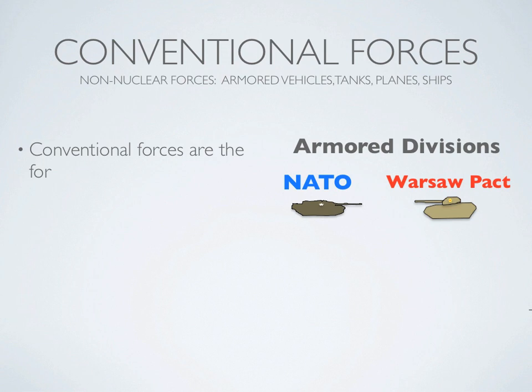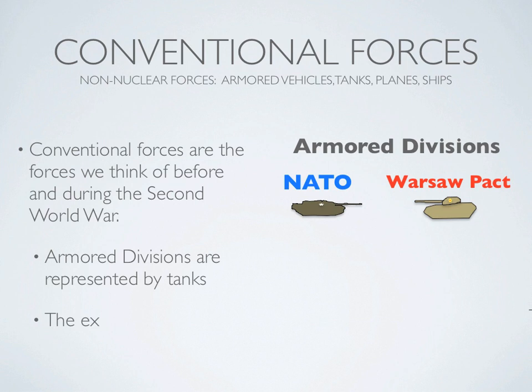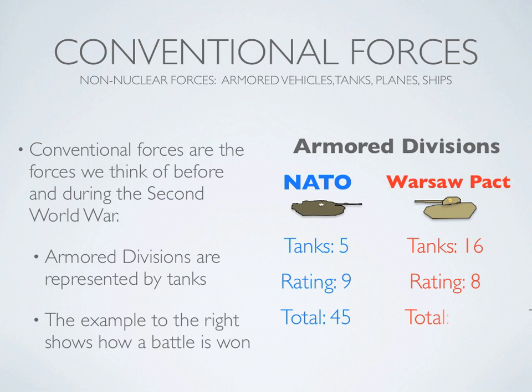Conventional or non-nuclear forces are the types of weapons used on the battlefield, like tanks and planes. In the Cold War simulation, tanks represent armored divisions on the map. The example on the right shows NATO forces have 5 tanks or armored divisions and the Warsaw Pact has 16. Taking the ratings of each times the number of divisions gives a total of 45 for NATO and 128 for the Warsaw Pact — and the Warsaw Pact wins.